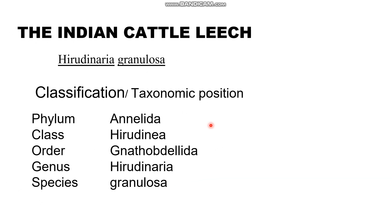Now we will study the Indian cattle leech. The cattle leech is found on cattle — cows, buffaloes — all these are cattle. Its scientific name or zoological name is Hirudinaria granulosa. That is its classification or taxonomic position. Taxonomic position means its place in the taxa: kingdom, phylum, class, order, family, genus, species. Kingdom: Animalia. Phylum: Annelida. Class: Hirudinea. Order: Gnathobdellida. Genus: Hirudinaria.